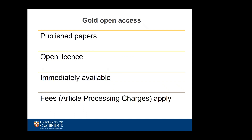Gold open access is the second type of open access that I will cover here. Gold open access means that the published paper is made openly available immediately on publication with an open licence like a CC BY licence. Gold open access is not the same as being free to read, which is where a publisher makes content available but the content does not have an open licence and may not be available immediately on publication or forever.